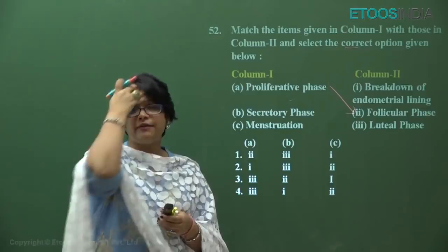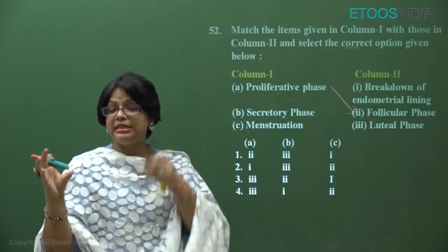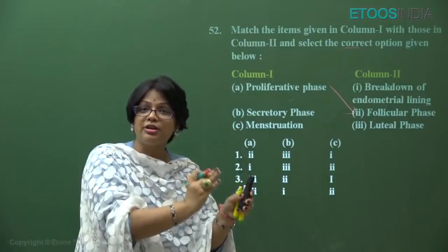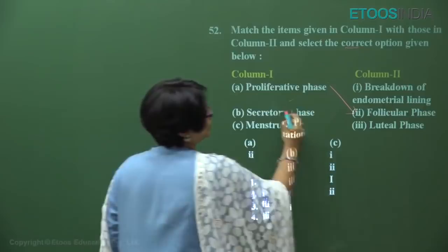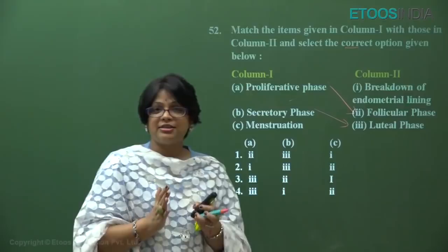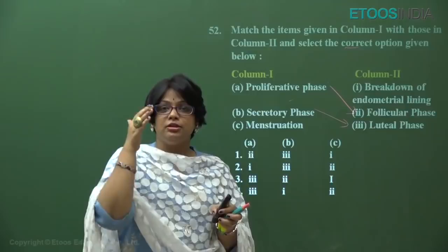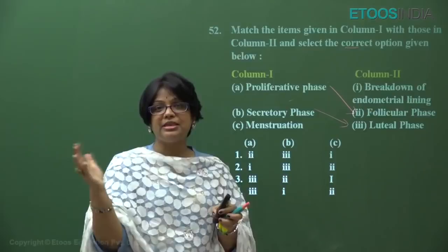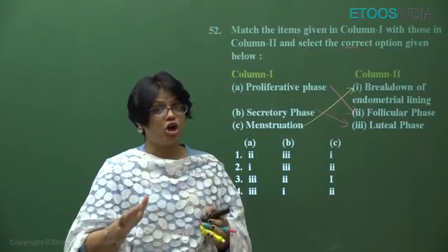The remaining Graafian follicle forms the corpus luteum — so the next ovarian stage is the luteal phase. Corpus luteum secretes progesterone, which makes the uterine endometrium secretory to hold a fertilized egg and maintain pregnancy. So the secretory phase corresponds to the luteal phase. If fertilization has not occurred, the corpus luteum shrinks, progesterone and estrogen levels fall, and the endometrium sheds — this is menstrual bleeding or menstruation.